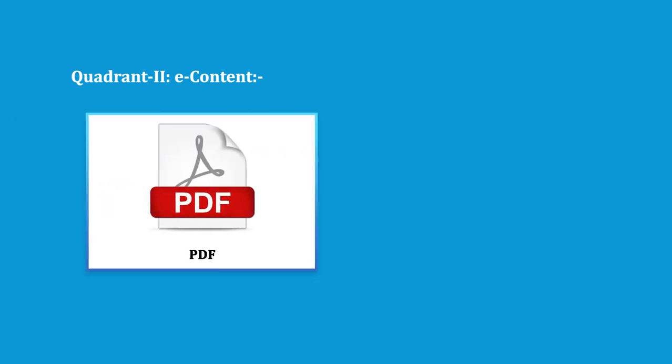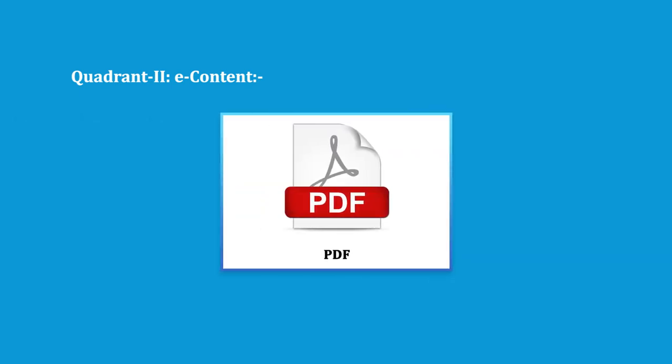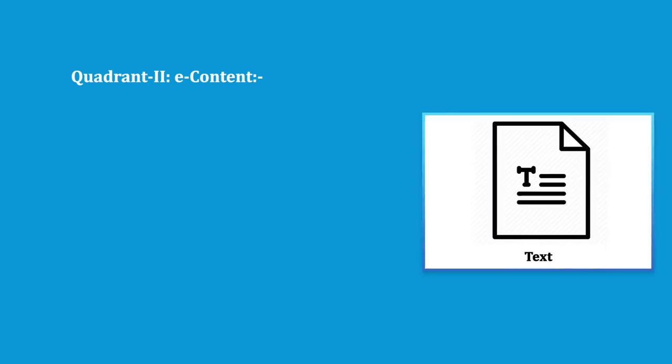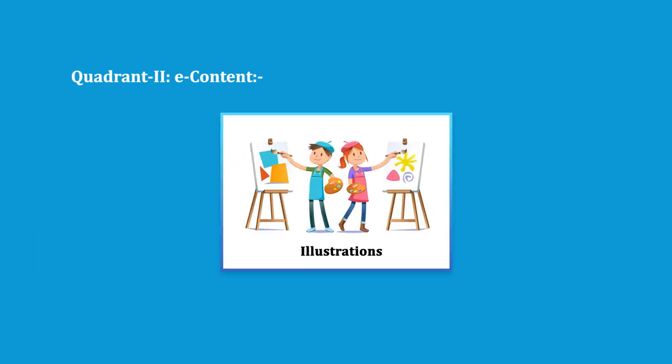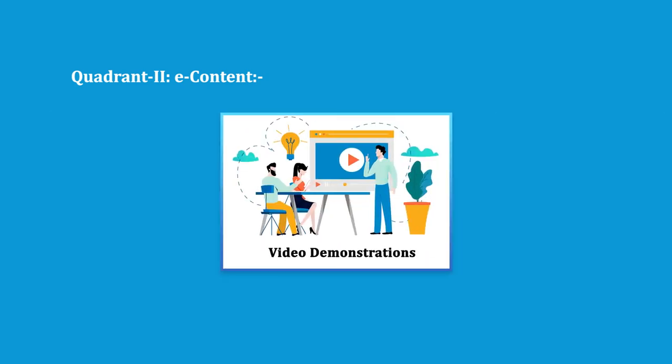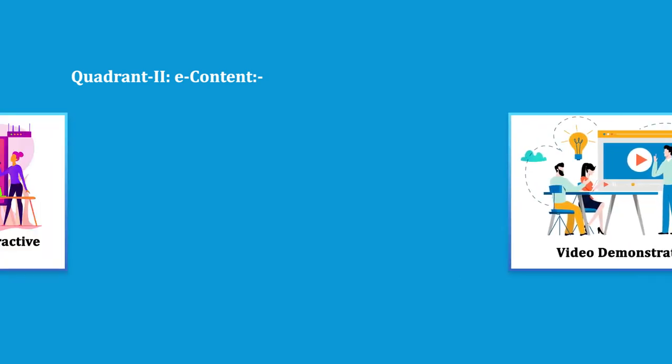Quadrant 2 is e-content, which shall contain PDF, text, e-books, illustrations, video demonstrations, documents and interactive simulations wherever required.